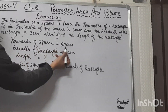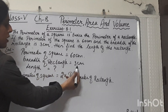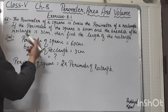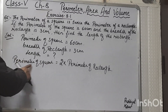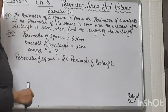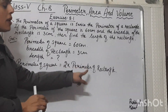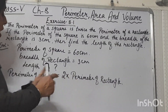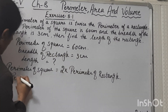The perimeter of the square is 60 cm, breadth of the rectangle is 3 cm, and we have to find the length of the rectangle. It is given that the perimeter of the square is twice the perimeter of the rectangle, meaning double the perimeter of the rectangle. Since the perimeter of the square is given, what will be the perimeter of the rectangle?